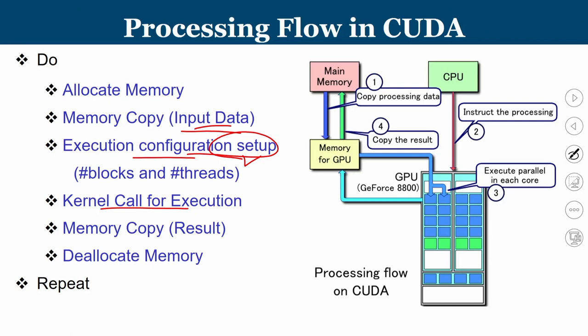The whole operation can be organized as: step 1, copy processing data from main CPU memory into the GPU; step 2, the CPU instructs the GPU to carry out the task by keeping the configuration ready and triggering the operation; step 3, execute parallel things on each core. Once the result is ready, it comes back into GPU memory, and you copy the result out. This structure is essentially the same across GPUs, such as the GeForce 8800.